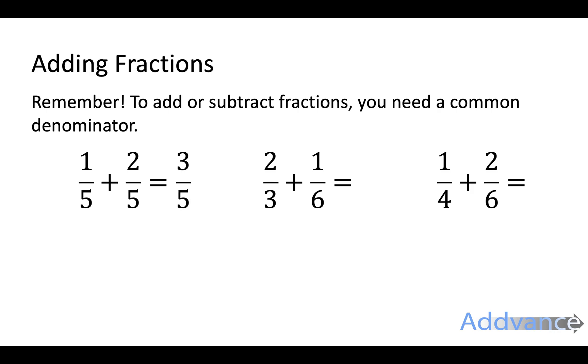Now 2 thirds plus 1 sixth I need the bottom number to be the same. I'm going to change that 3 to be a 6 by multiplying by 2, multiplying by 2. 2 times 2 is 4 plus 4 sixths plus 1 sixth is 5 sixths.